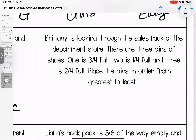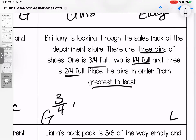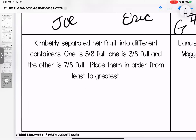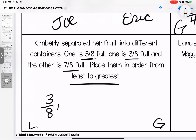Brittany is looking through the sales rack at the department store. There are three bins of shoes: bin one is three fourths full, bin two is one fourth full, and bin three is two fourths full. Place the bins in order from greatest to least. They have the same bottom number so I want the bigger top: the greatest would be three fourths, followed by two fourths, and finally the least amount would be the third bin with one fourth. Now Kimberly separated her fruit into three containers: one is five eighths full, one is three eighths full, and the other is seven eighths full — place them in order from least to greatest. Same bottom number so we're looking at the top: her smallest amount is three eighths, followed by five eighths, and her biggest container is seven eighths full.